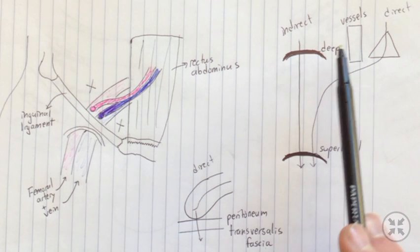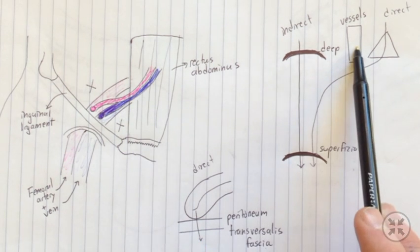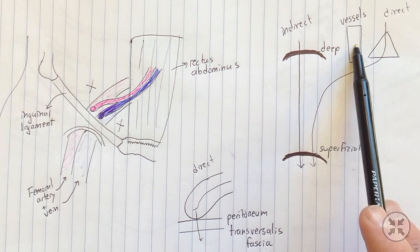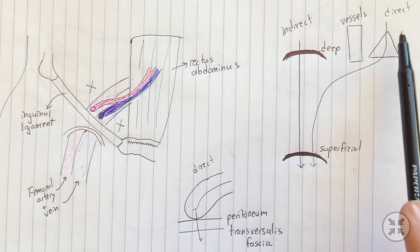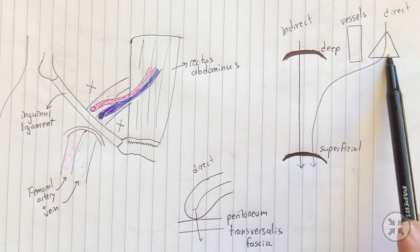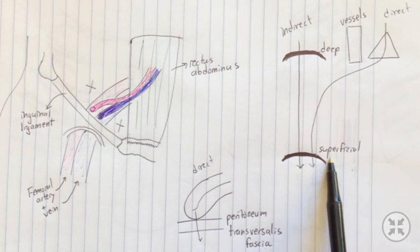These vessels that I denoted here are actually corresponding to the inferior epigastric vessels here. As you notice again, this is lateral to the inferior epigastric vessels. The direct hernia, you might notice that I've drawn this triangle, which shows that it's Hesselbach's triangle. It moves through Hesselbach's triangle and also through the superficial inguinal ring.